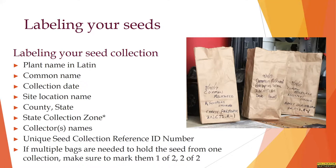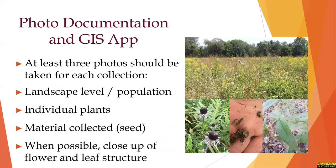On this slide, you'll see some of the information that we need to be on the collection bag, and this is also covered in detail in the seed collection manual. You'll need to take pictures of the plants throughout the collection process. Digital photos should be taken at the landscape level, of the individual plant, and of the materials collected. Photos should be labeled with your unique collection ID number and submitted through the Survey123 application. You're welcome to take these photos with your mobile device, which will make them easier to input into the GIS app.